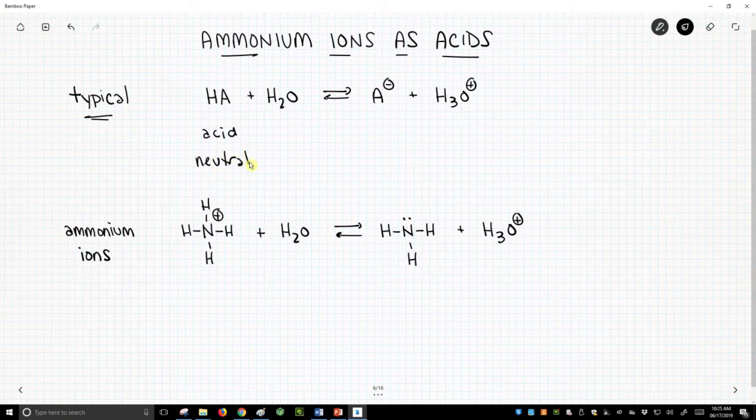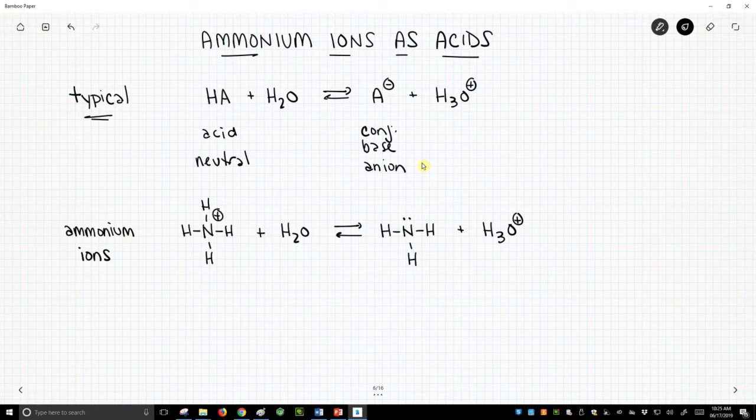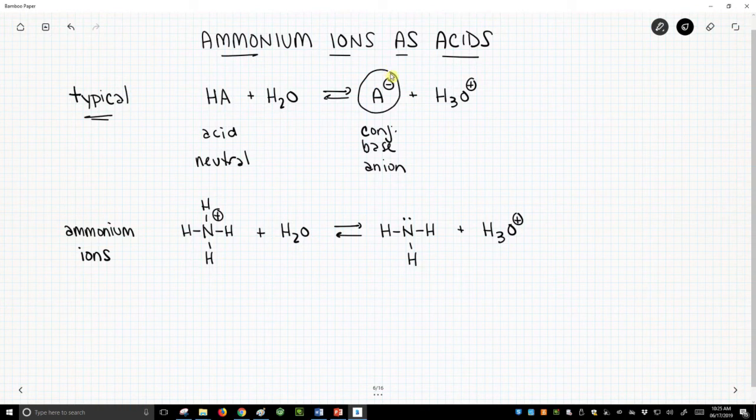And once we do the proton transfer in the acid-base reaction, we form a conjugate base, and this is an anion. That's what most of our reactions are going to look like. We're going to have a neutral acid, it loses a proton, and it forms this anion. And we will talk about how does that anion handle the charge? And that gives us insight into organic chemistry, where we form charges as intermediates.